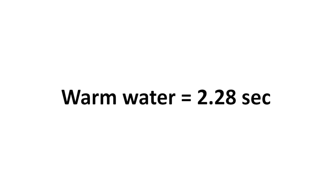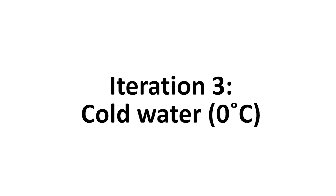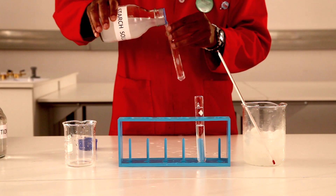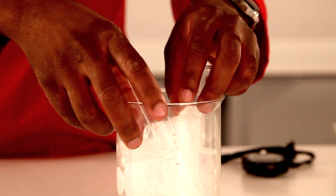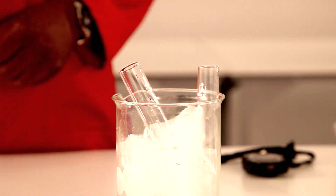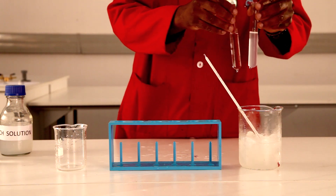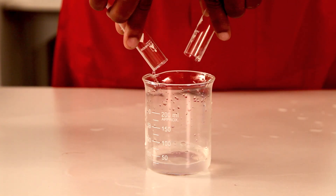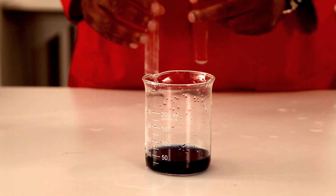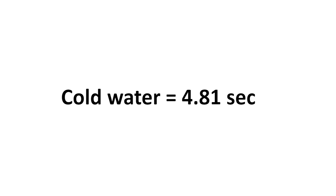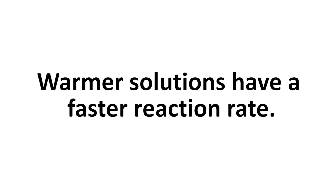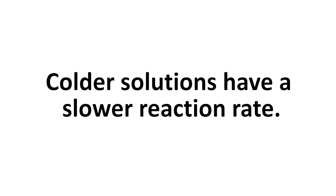The reaction time was 2.28 seconds for the warm water solution. Iteration 3: Cold water. Pour 10 cm³ of iodine and starch solution into separate test tubes. Place the test tubes in a beaker with ice, allowing the contents to cool down to zero degrees Celsius. Pour the contents of the test tubes into a 250 cm³ beaker and with a stopwatch record the time elapsed from mixing the solutions until it turns deep blue. The reaction time was 4.8 seconds for the cold water solution. Notice that warmer solutions have a faster rate of reaction and colder solutions have a slower reaction rate.